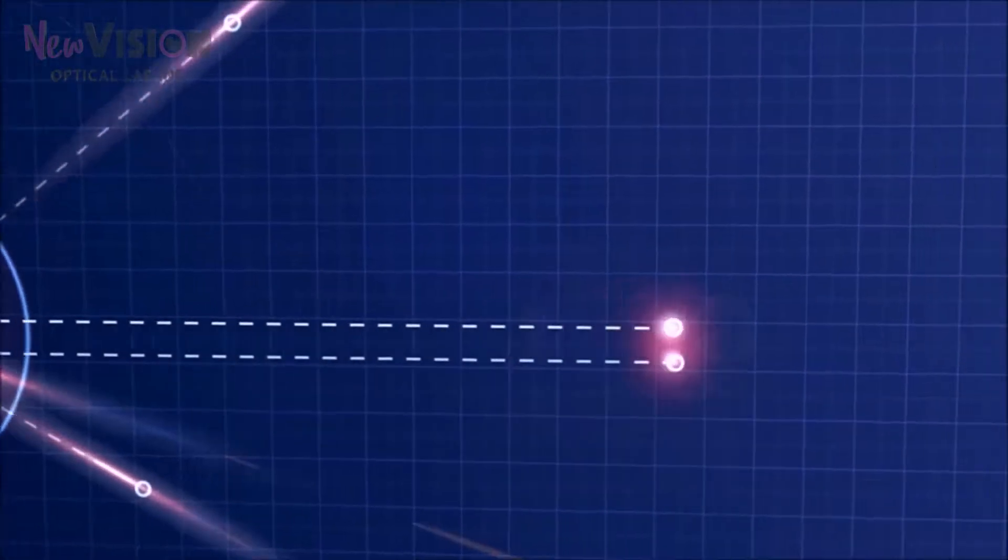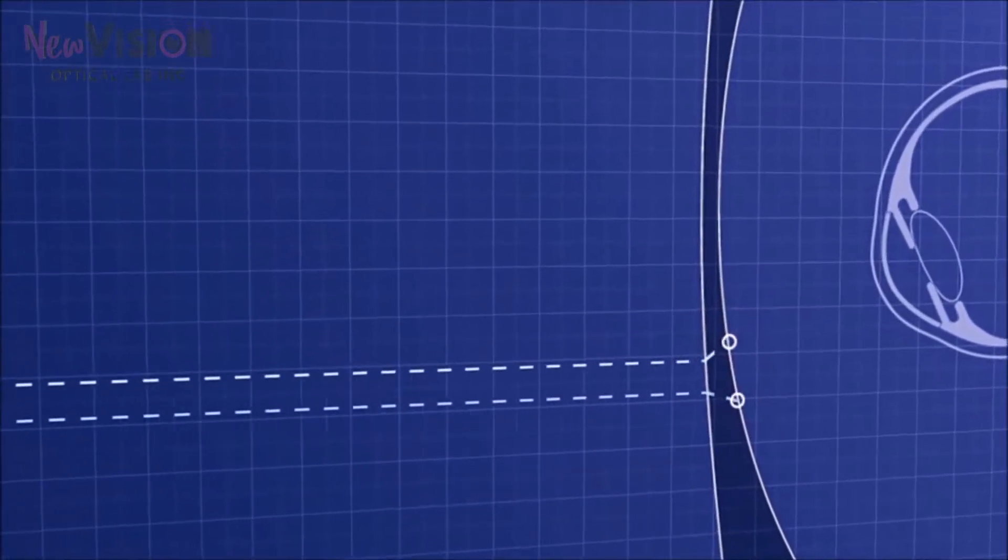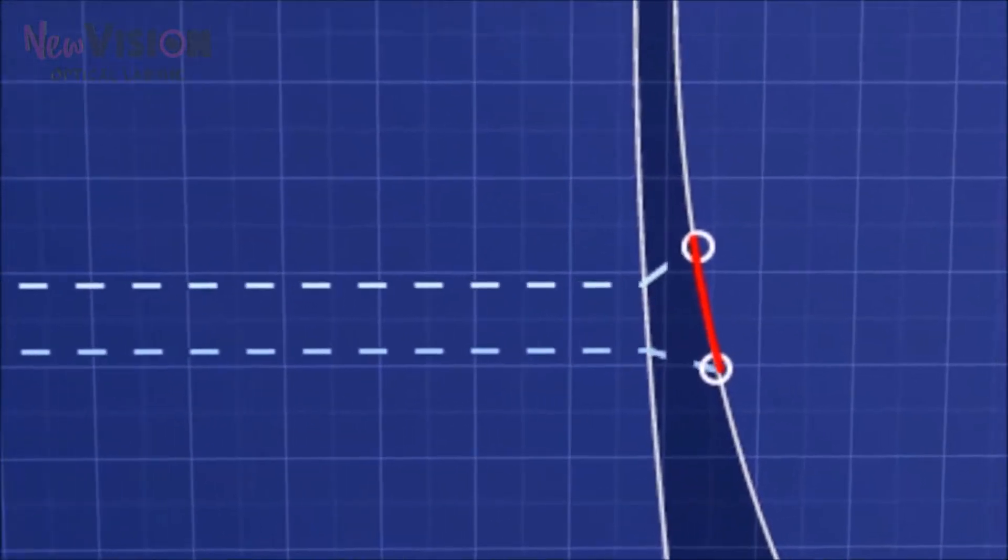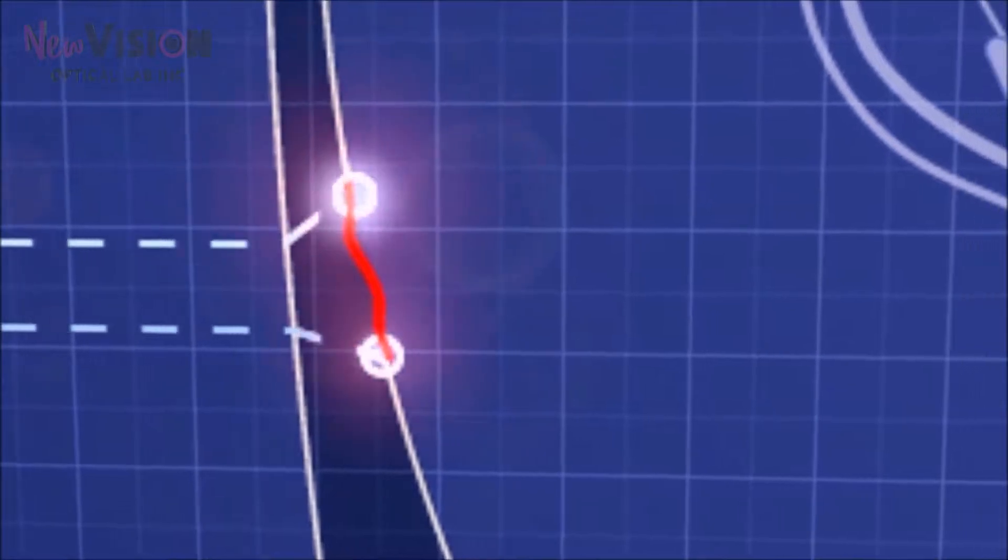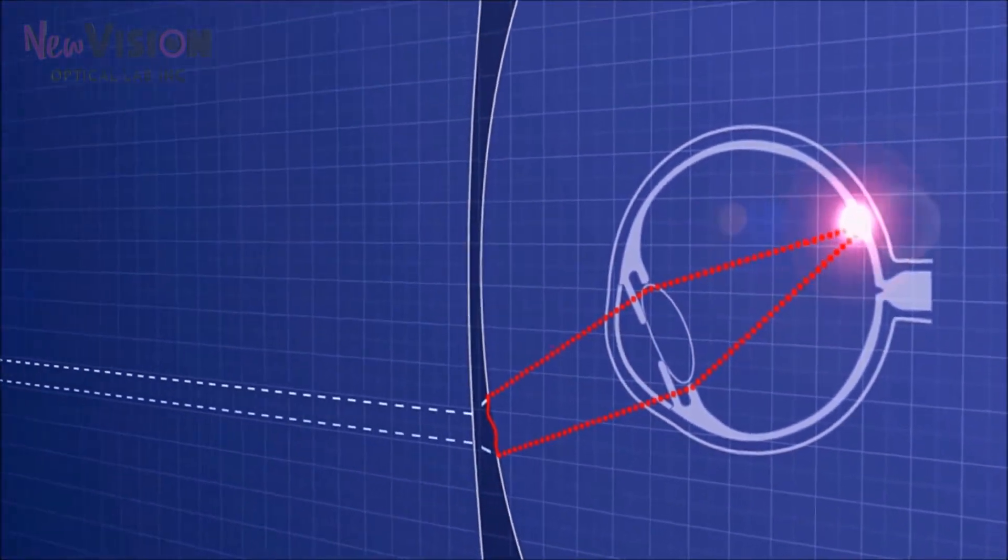This beam comes from the outer environment, refracts on the front and then back surface of the lens. The back surface is modified using this refraction so that the beam changes its focus to the center of the retina, the fovea.